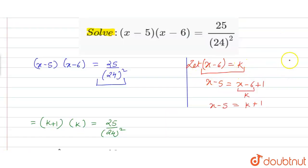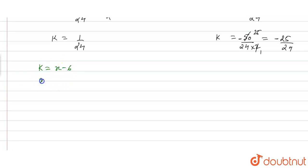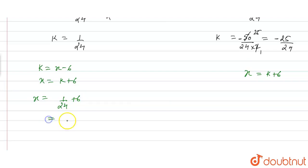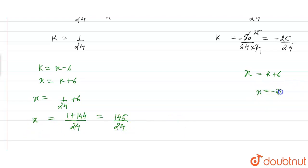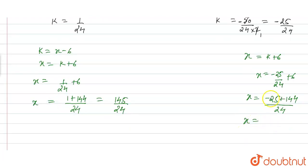Since k is x minus 6, x will be equal to k plus 6. For the first value, x is equal to 1 by 24 plus 6; taking 24 as LCM, 1 plus 144 gives x equal to 145 upon 24. For the second value, x is equal to minus 25 upon 24 plus 6; taking 24 as LCM, minus 25 plus 144 is 119, so x is equal to 119 upon 24.